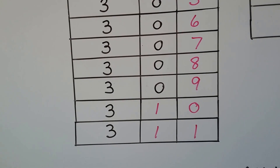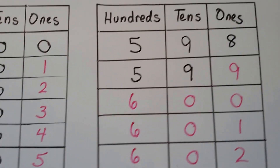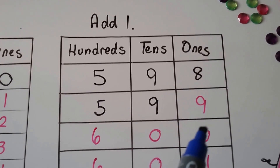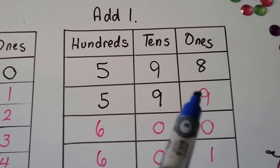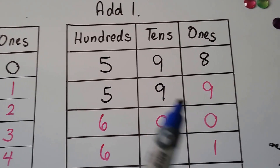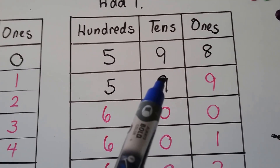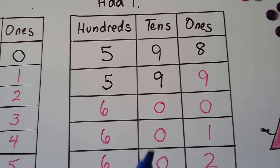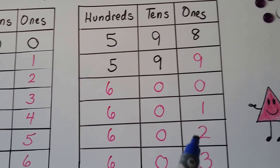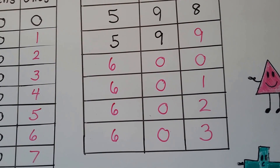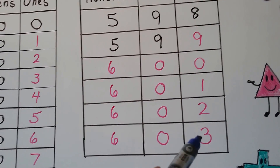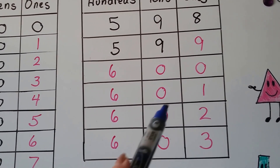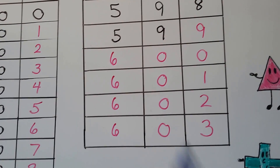If we have 598 and add one, we get 599. Add one more and it regroups: a one in the tens place and zero in the ones place. But now we've got nine plus one in the tens, so we regroup again — a one in the hundreds place and zero in the tens. Then 601, 602, 603. It keeps going up by one, and whenever it overflows a place value, that place becomes zero and the next place gets one.